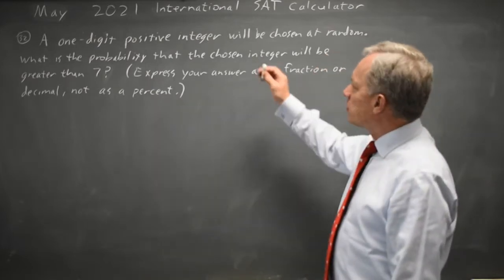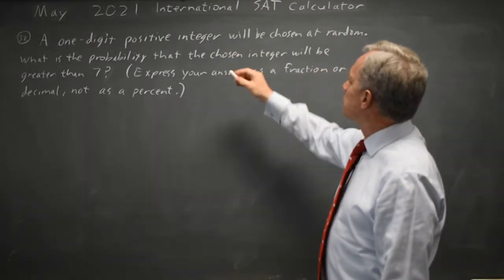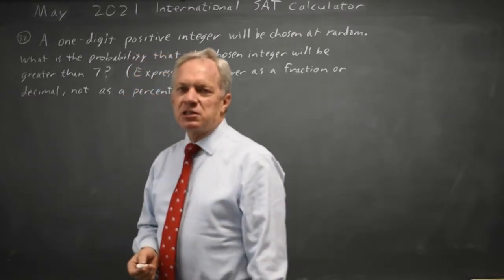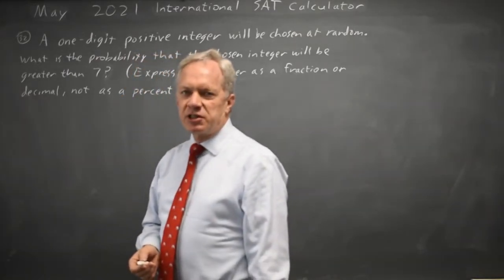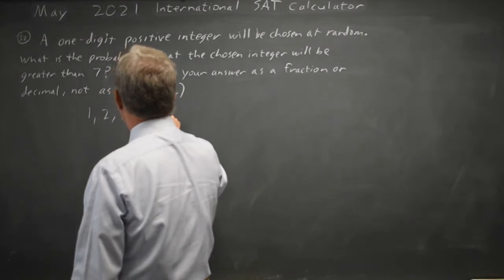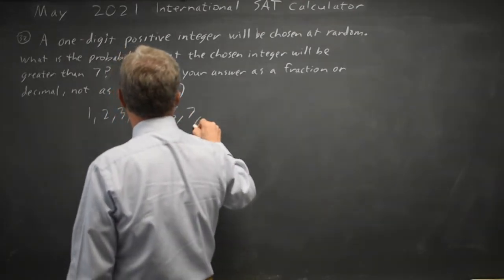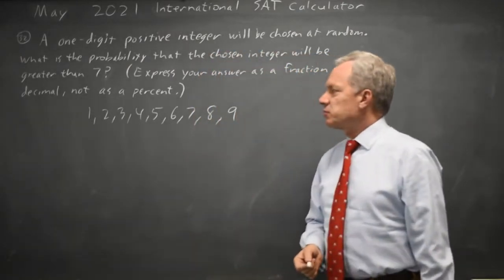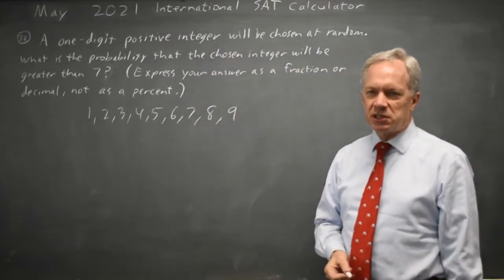The College Board asks for a probability, a one-digit positive integer. Integers are whole numbers, positive or negative. Positive integers are integers greater than zero. So that would be 1, 2, 3, 4, 5, 6, 7, 8, 9. And 10 would be a two-digit positive integer. So those are all the one-digit positive integers.